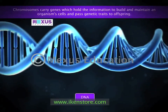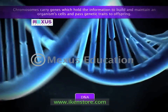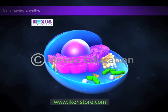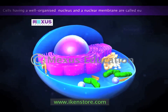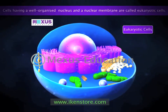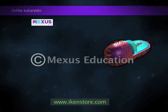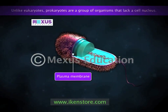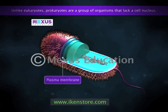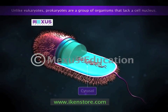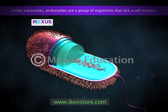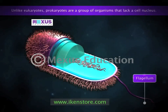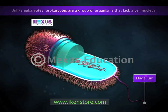Genes form stretches of DNA, which is a nucleic acid that contains the genetic instructions used in the development and functioning of all known living organisms. Cells having a well-organized nucleus and nuclear membrane are called eukaryotic cells, and such organisms are called eukaryotes. Prokaryotes, by contrast, are a group of organisms that lack a cell nucleus. Prokaryotic cells have a plasma membrane and are surrounded by a semi-fluid substance called cytosol. On the outermost layer of prokaryotes there is a waxy coating called the capsule, which protects the cell and helps it stick to other surfaces. A flagellum is a tail-like projection that protrudes from the cell body of certain prokaryotic cells.